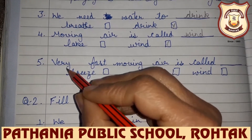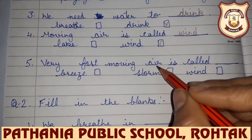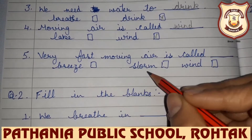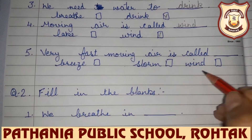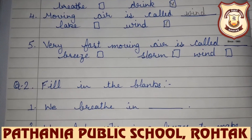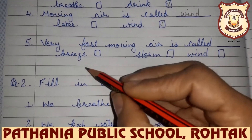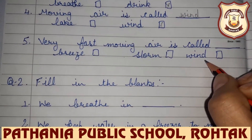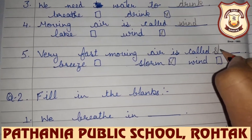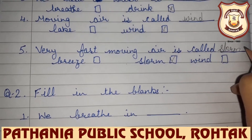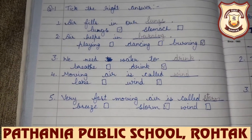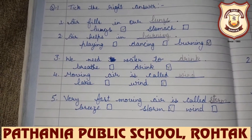Number five: Very fast moving air is called blank — breeze, storm, or wind? When air moves very fast, we call it storm. So tick on storm and write down in the blank: storm. That was question number one, tick the right answer. Now let us move to question number two.